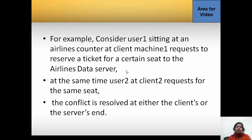For example, consider an airline database in which a user sitting at an airline counter on a client machine sends a request to reserve a ticket for a certain seat to the airline's data server. At the same time, another user from a second client requests the same seat. The conflict is resolved at either the client's or the server's side. In this case, the conflict of who gets the seat is decided by the DBMS through programming logic employed either at the client side or the server side.